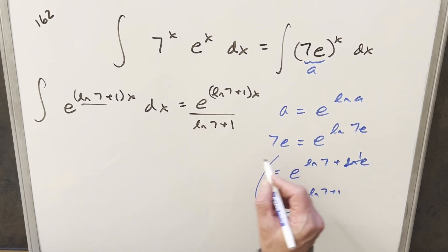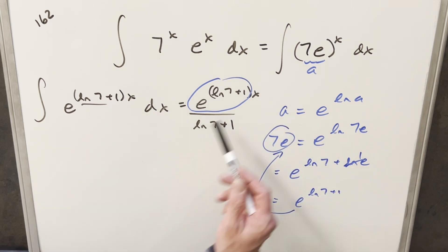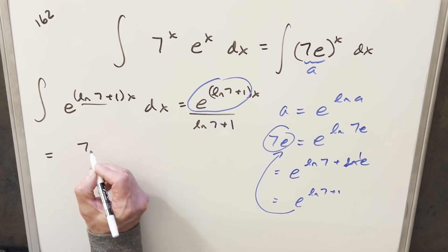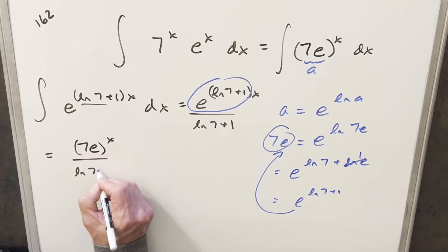This is the same thing as 7e. We can leave it like this, but let's put it back in this form. I can write my solution as 7e to the x over ln 7 plus 1.